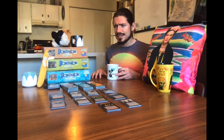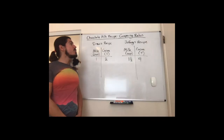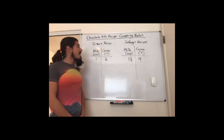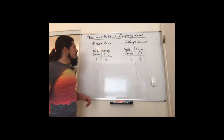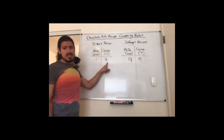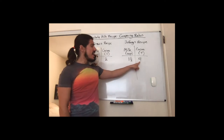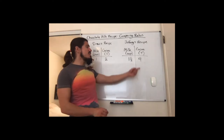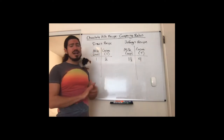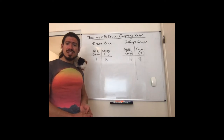Jeffrey says he likes it, but he thinks his chocolate milk recipe is even more chocolatey. Why don't we have a look at Jeffrey's recipe? I've only decided to focus on the milk and the cocoa because that's what's going to determine how chocolatey the chocolate milk is. I use one cup of milk to every two tablespoons of cocoa. Jeffrey likes to make a little more, so he always uses one and a half cups of milk to every four tablespoons of cocoa. It's a little hard to compare because Jeffrey's recipe has more cocoa but also more milk.